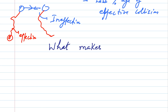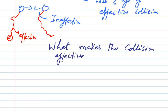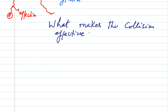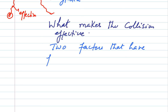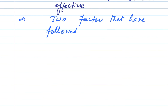So to summarize: reactions take place because of collisions, and reactions are of different speeds because of effective and ineffective collisions - more effective collisions means fast reaction, less effective collision means slow reaction. The next question is: what makes a collision effective? There are two factors that have to be followed for a collision to be effective. The first one is: the energy barrier should be crossed or overcome. When the particles collide, they should have enough energy to cross the barrier.